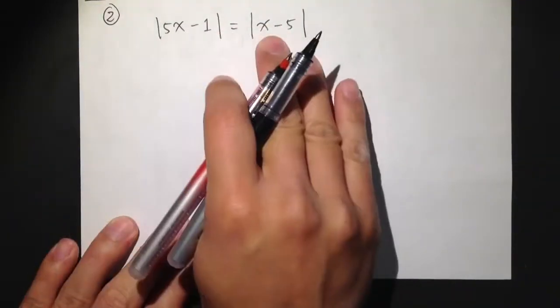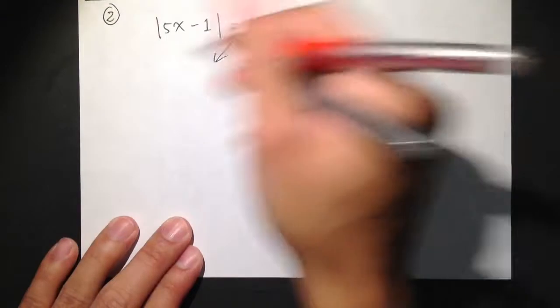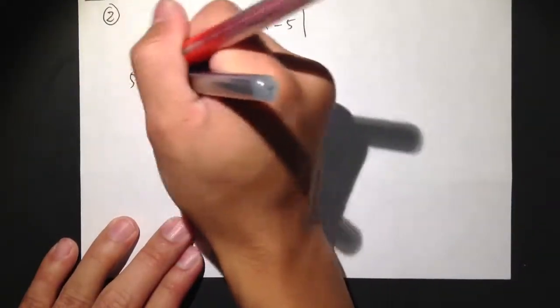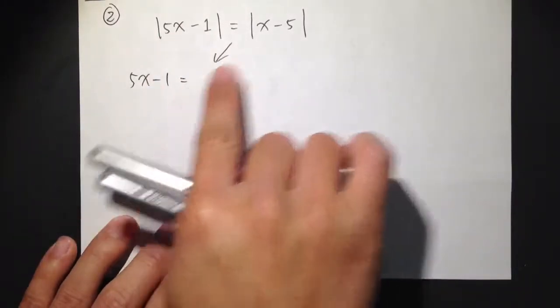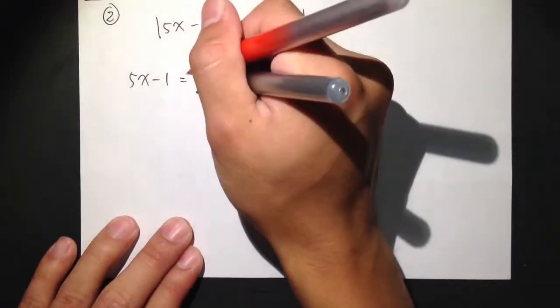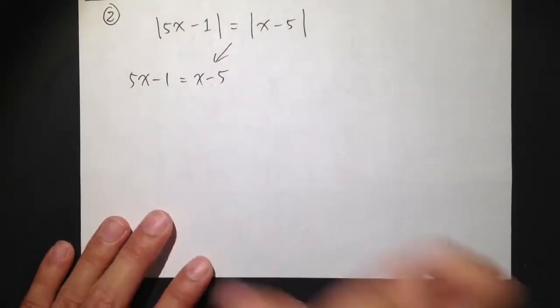So I have that here, two absolute values. First step, just write down the equation 5x minus 1 equals to x minus 5, nothing change, but I just take out the absolute value.